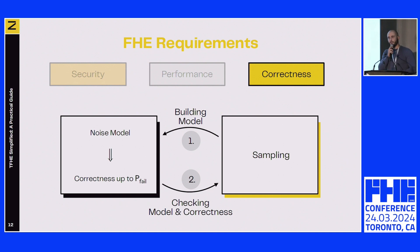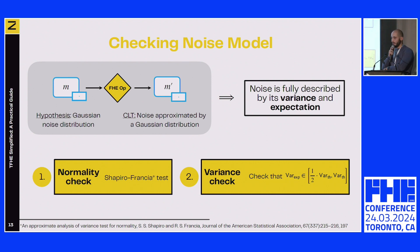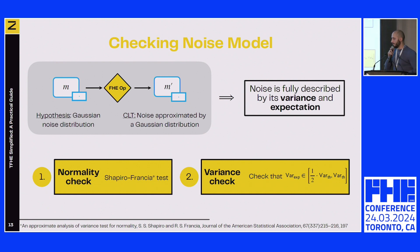Practically, verifying very low failure probabilities is complicated. We need to verify two things: first, that our assumptions about the noise formula are correct. The hypothesis is Gaussian noise, but we are mixing it with other distributions like uniform. We apply the central limit theorem and say that many uniform distributions mixed with some Gaussian converge to a Gaussian. This is an assumption since CLT holds in the limit and we have finite samples. Assuming Gaussian noise means it is fully described by only variance and expectation, where expectation is generally zero since the Gaussian is centered. The first check is to verify that we indeed have a Gaussian distribution—using the well-known Shapiro-Francia test, which confirms the output noise distribution after computing a PBS verifies a Gaussian distribution.